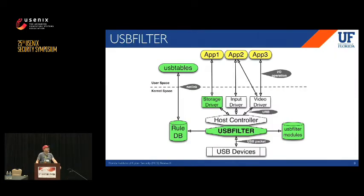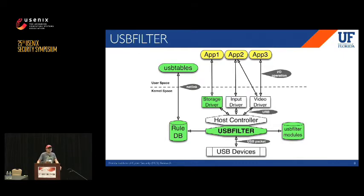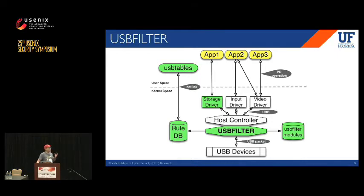And here we go — we designed and implemented USB Filter. USB Filter is a kernel component working under the host controller, meaning we basically trust the kernel. It has two other kernel components: USB Filter modules, which allow sysadmins or developers to write new features and plug them into USB Filter dynamically. Before USB Filter filters each packet, it queries a root database containing all packet filtering policies. In user space, we provide a tool called USB Tables to manage all policies and rules.